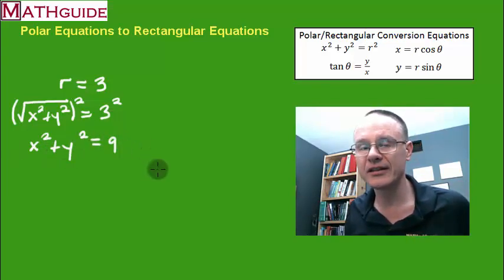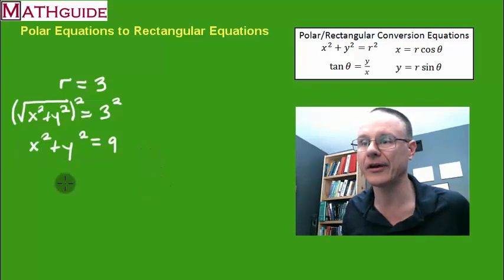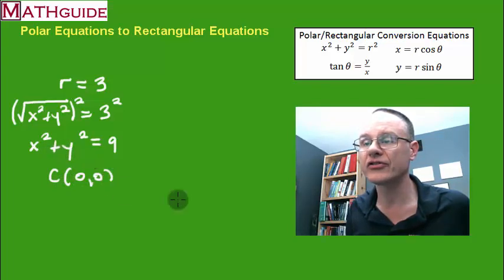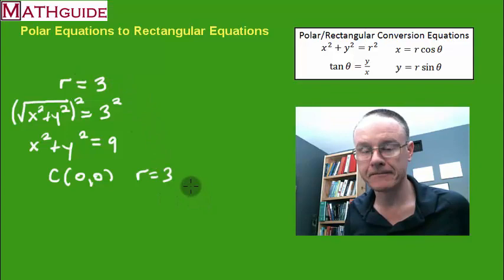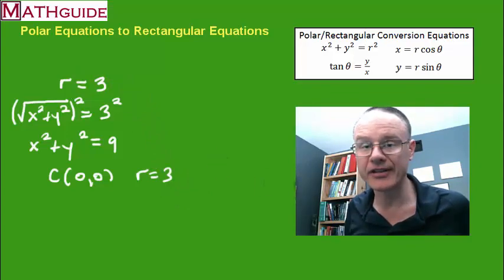If I square both sides, squaring being the opposite or inverse operation from square rooting, I get x squared plus y squared equals 3 squared, which is 9. And of course, this is the rectangular equation that says the exact same thing. If you remember anything about circles, there's your x and y are 0, 0, and the radius is just the square root of that. So they say the same thing. Let's move on to our second example.